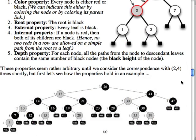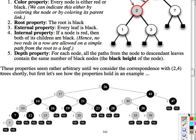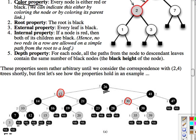Let's look at how red-black trees are represented in the Corman textbook. Here's a red-black tree where red nodes are shown as lighter colored nodes. The color property: every node is either red or black. The root property: the root is black. The external property: all external leaves are black. The internal property: if a node is red, then both its children are black — we see examples where this red node has two black children, and so on.